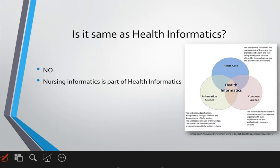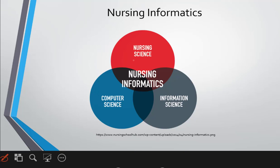To understand nursing informatics, we need to understand the components of health informatics first. In health informatics there are three things: healthcare, information science, and computer science. Information science is the classification, manipulation, storage, retrieval, and dissemination of information. Information is related to health, and computer application is also an important part of health informatics. When we talk about nursing informatics, there are the same three components — the only thing that changes is nursing science replaces health science.